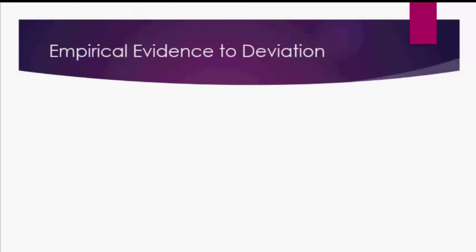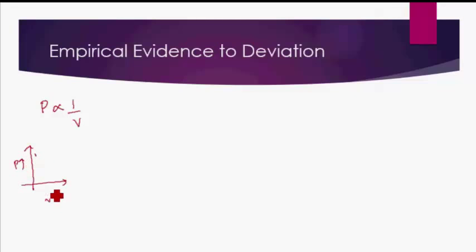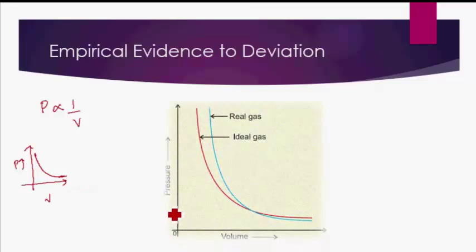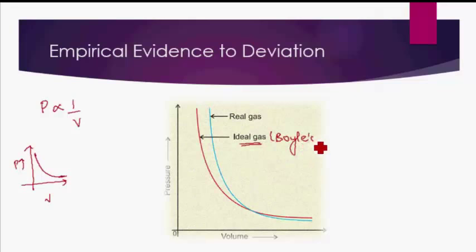Some empirical evidence of deviation can be seen by plotting graphs of various gas laws. If you remember Boyle's law, pressure is inversely proportional to volume, and the graph of P versus V for an ideal gas comes out to be a hyperbola. Let's take a real gas in a container and see how it behaves. The red colored line shows the graph of an ideal gas pressure versus volume, which perfectly follows Boyle's law.